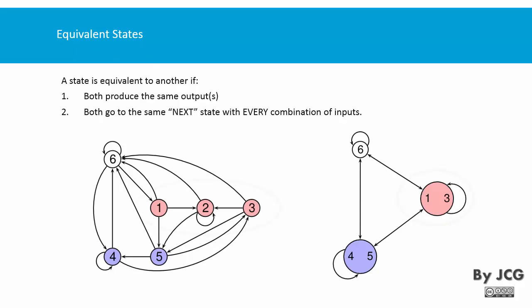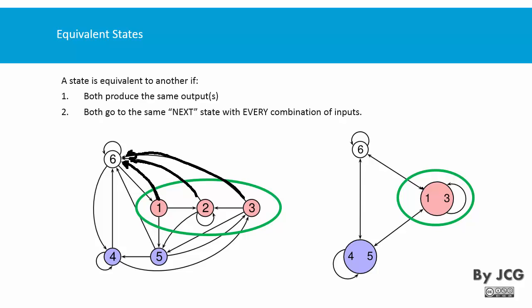Let's analyze the previous example. Here we have the two diagrams — the large one and the reduced one — and I'm pointing out which are the equivalent states. We are making sure that the second condition is true: we have arrows coming out from states 1, 2, and 3, and the same happens with their equivalent state. This example is simplified, so we are not seeing the outputs of this diagram — and that is important because you also have to make sure that the states produce exactly the same outputs.